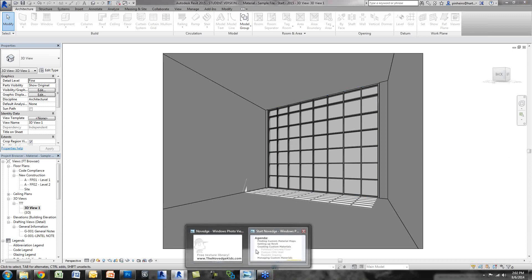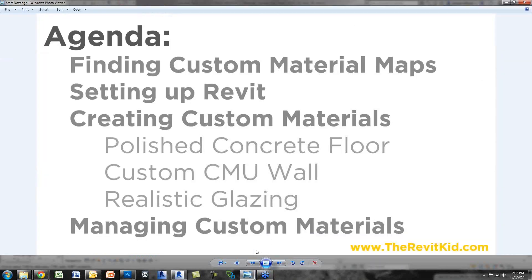I want to open up the agenda I created. I'm going to show you how to find custom material maps — where I go to find material textures and seamless maps — and how to create bump maps and apply them. Then setting up Revit to point to the correct folder so you don't have missing files. Creating custom materials: three examples — a polished concrete floor, a CMU wall, and realistic glazing. And finally how to manage custom materials by creating your own library for use across multiple projects.